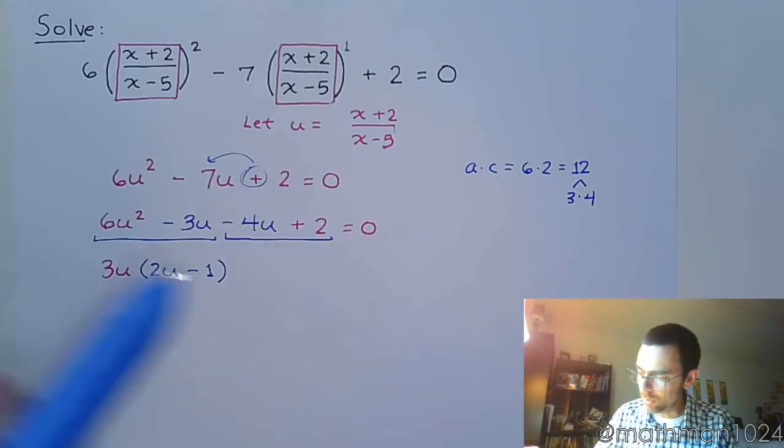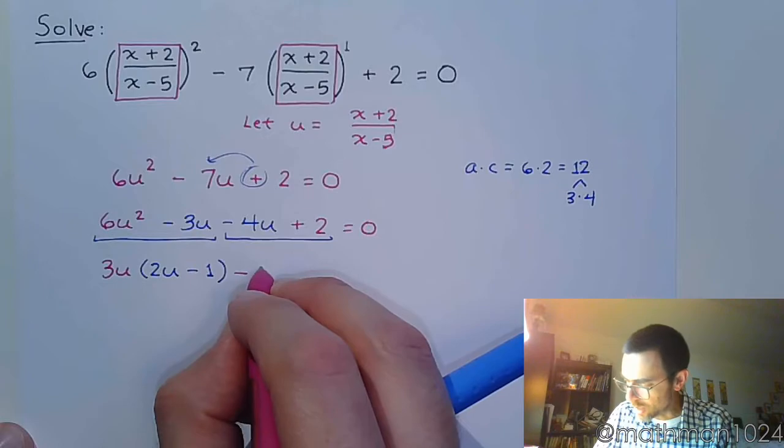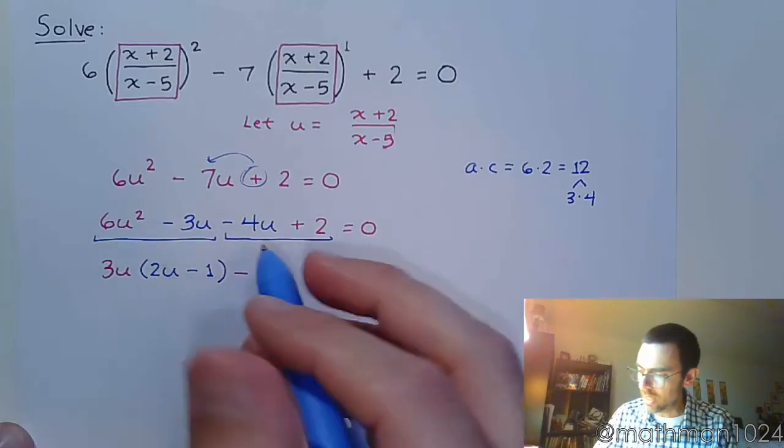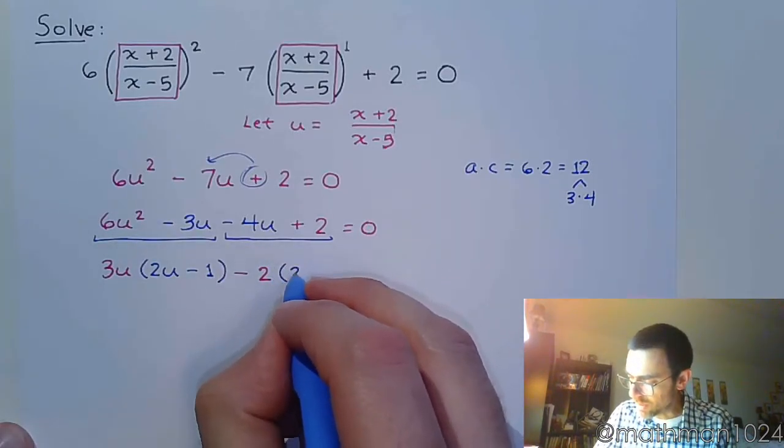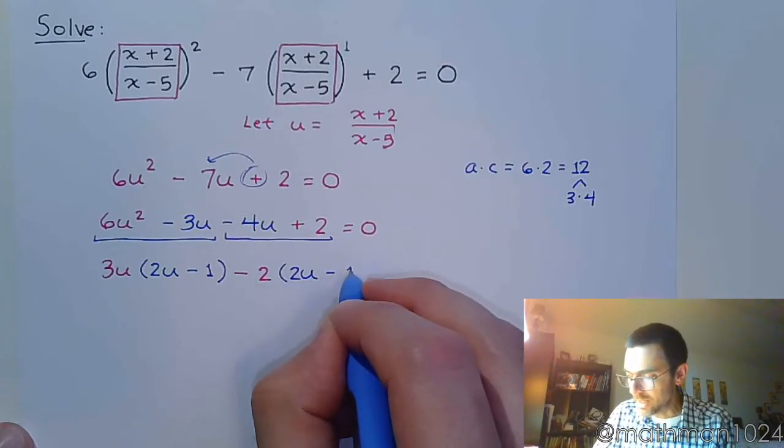In the second group, you lead with a negative, and the common factor here is 2. Factoring out that negative 2 gives us a positive 2u and a negative 1.